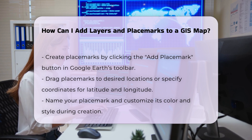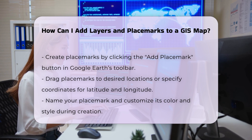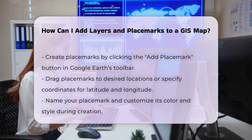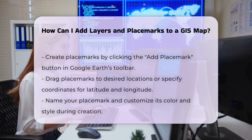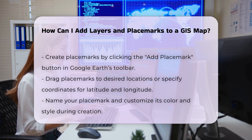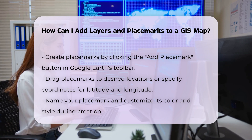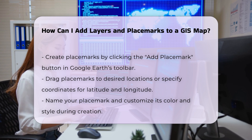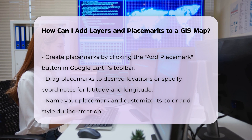Organizing Placemarks: You can organize your placemarks by grouping them into layers. In Google Earth, go to Add in the menu bar, navigate to Layer, and then drag your placemarks into the layer. This helps in managing multiple placemarks efficiently.